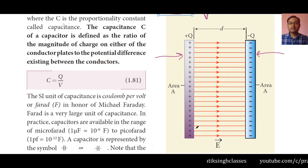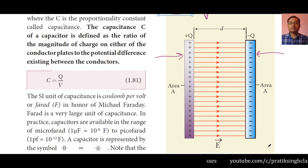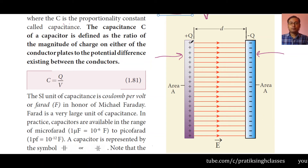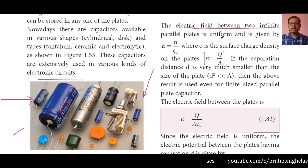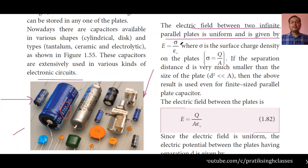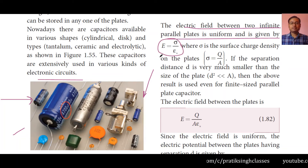The electric field lines go from the positive plate to the negative plate. From our previous video, we know that electric field lines emerge from positive charges and enter negative charges — the same concept applies here. The electric field between the two infinite parallel plates is uniform and is given by E = σ/ε₀. If you haven't seen the previous video, please go through it to understand this well.